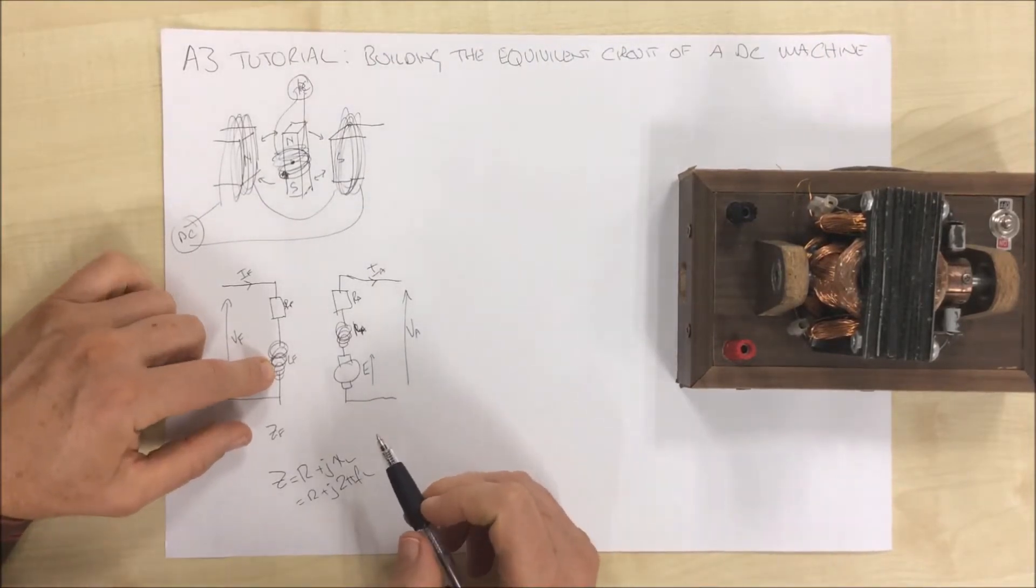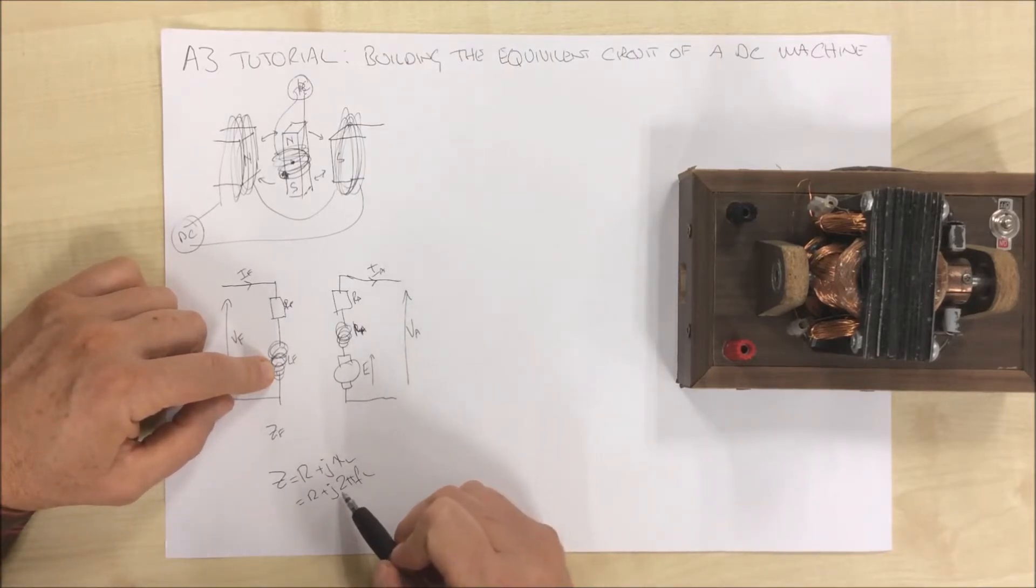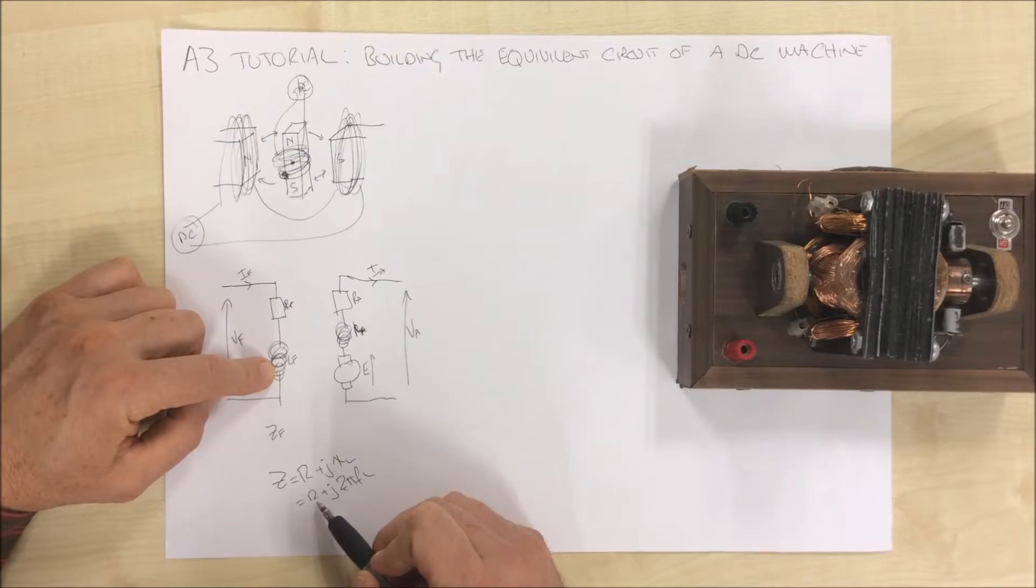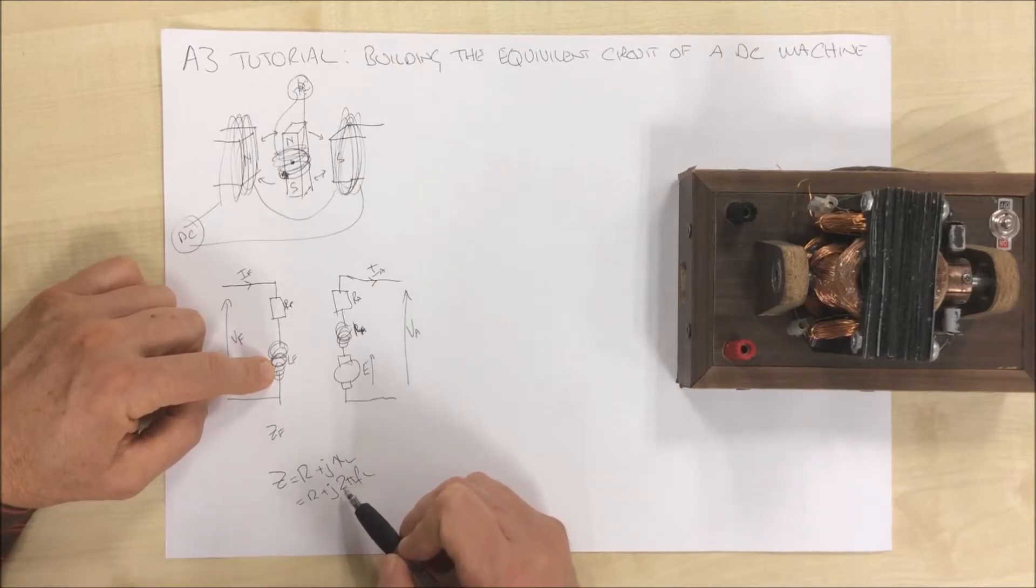This is a DC circuit. To understand the impedance, the resistance doesn't change with the DC circuit. The inductance, this gets interesting. Well, it's fairly straightforward, but it's a bit of an eyebrow raise when you first understand it.